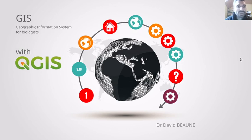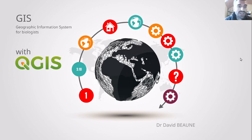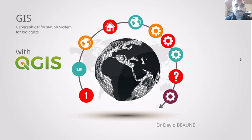In this video, we are going to talk about GIS — Geographic Information System for Biologists. This first video, number one, is the introduction to this course. We are going to talk about what is GIS, why it's useful for you as biologists working in conservation biology, and then we are going to use QGIS, which is for me the most powerful software to do Geographic Information System.